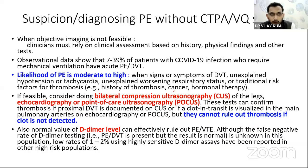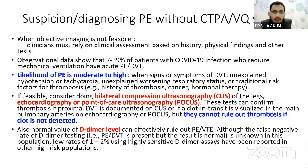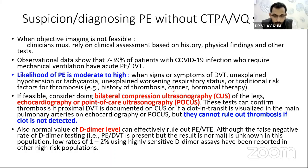We cannot always diagnose pulmonary embolism with CT pulmonary angiography or V/Q scan, because most of these patients are not in a position to be transported to the CT room. We have experienced this personally — we lost a family member to COVID while shifting him to the CT room at a different hospital. This shows that when we suspect pulmonary embolism and attempt to prove it in a CT room, it may end in a catastrophe.